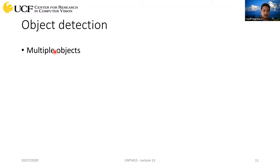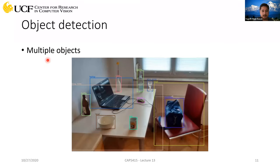In the real world, it will hardly happen that only one object category is present in an image. Most of the time there are multiple categories present. There is a distinction between multiple objects and multiple instances. Multiple objects means different types of objects — for example, five different categories: laptop, bottle, bowl, cup, et cetera.